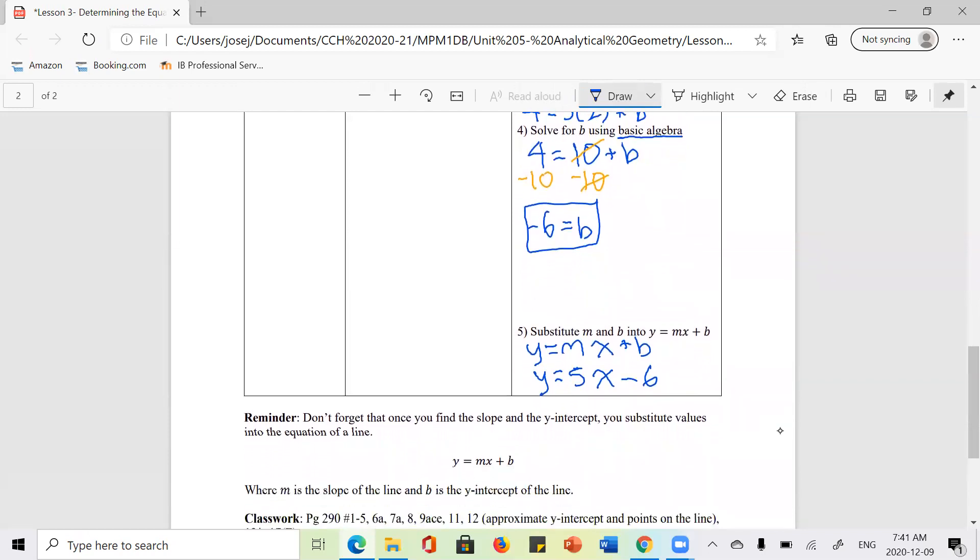So I hope that made sense. And again, this is really all you have to do to determine the equation of a line if you're given two points. So I think that was the last part that we had missed on purpose. And again, the reason I skipped is because we hadn't talked about solving equations. But now you're a pro at solving equations. I think you guys have been doing great with that.